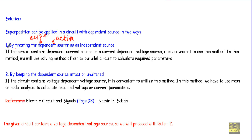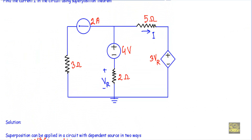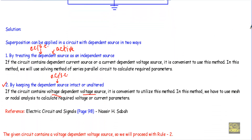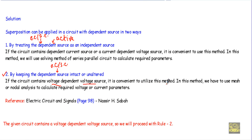In this problem I will use the second method. By keeping the dependent source intact or unaltered, that means we cannot replace the dependent source with an open circuit or a short circuit, nor keep it active like an independent source. Rather, we will keep the independent sources active and keep the dependent source intact. We use this method when the circuit contains a voltage dependent voltage source, which our circuit does.